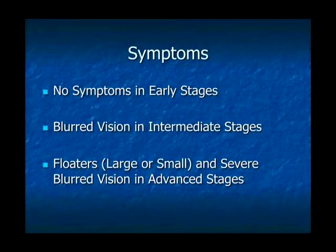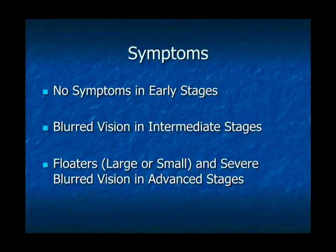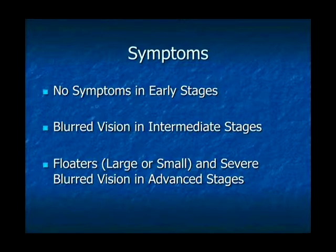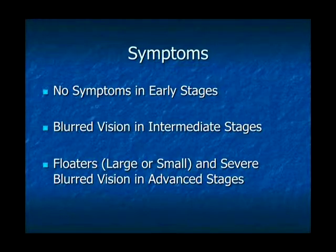One very important fact is that in the early stages, there are no symptoms with diabetic retinopathy. An eye doctor will see retinal findings on examination before a person would notice any blurred vision or symptoms at all. If retinopathy advances to intermediate stages, the main symptom is blurred vision — no specific spots, just general blurring. If it progresses further, people can get floaters from bleeding in the eye and severe blurred vision from blood vessel damage.